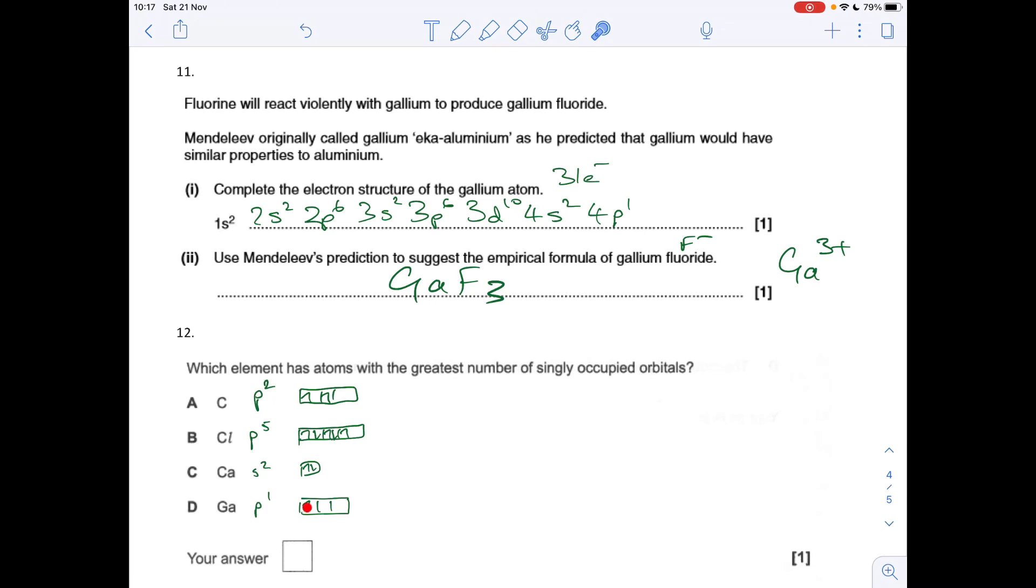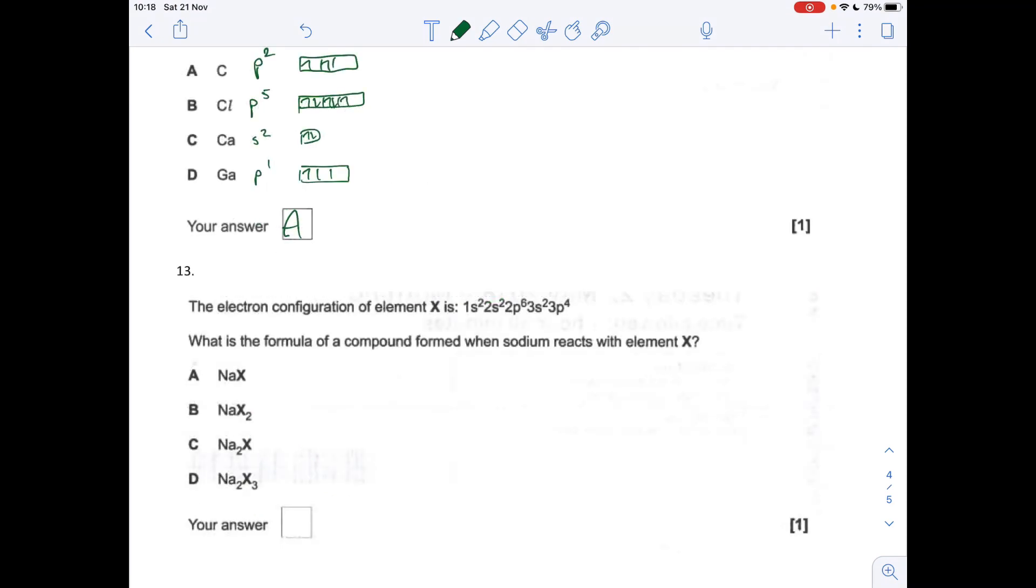Final question: electron configuration of element x is that. Because it's p4, it's going to gain two electrons and form an X2- ion. When you react that with sodium, which we know forms a one plus ion, we're going to need two sodium ions for every X2- ion. So it'll be Na2X, and therefore option c.